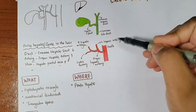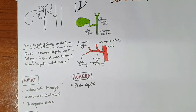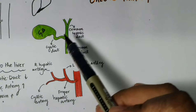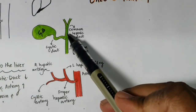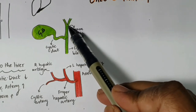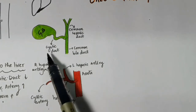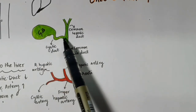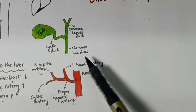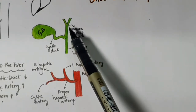Coming to the duct and artery — these are the structures we will be seeing in the Calot's triangle. The gallbladder connects via the cystic duct. From each lobe of the liver, two hepatic ducts come together to form the common hepatic duct. We use the word 'cystic' for anything related to the gallbladder. The common hepatic duct and the cystic duct together form the common bile duct. The common hepatic duct exits the liver through the porta hepatis.